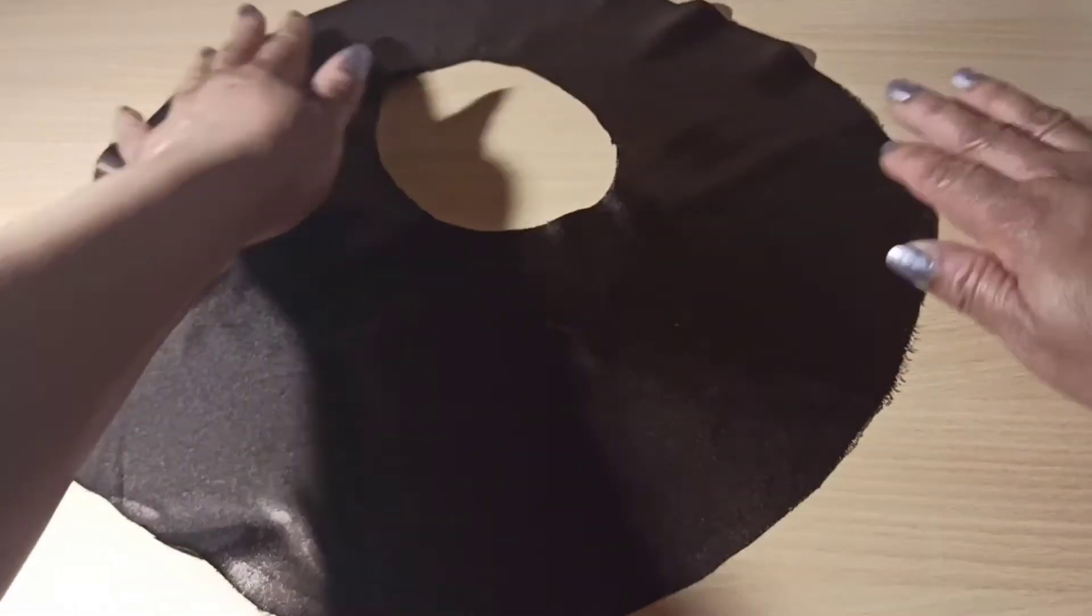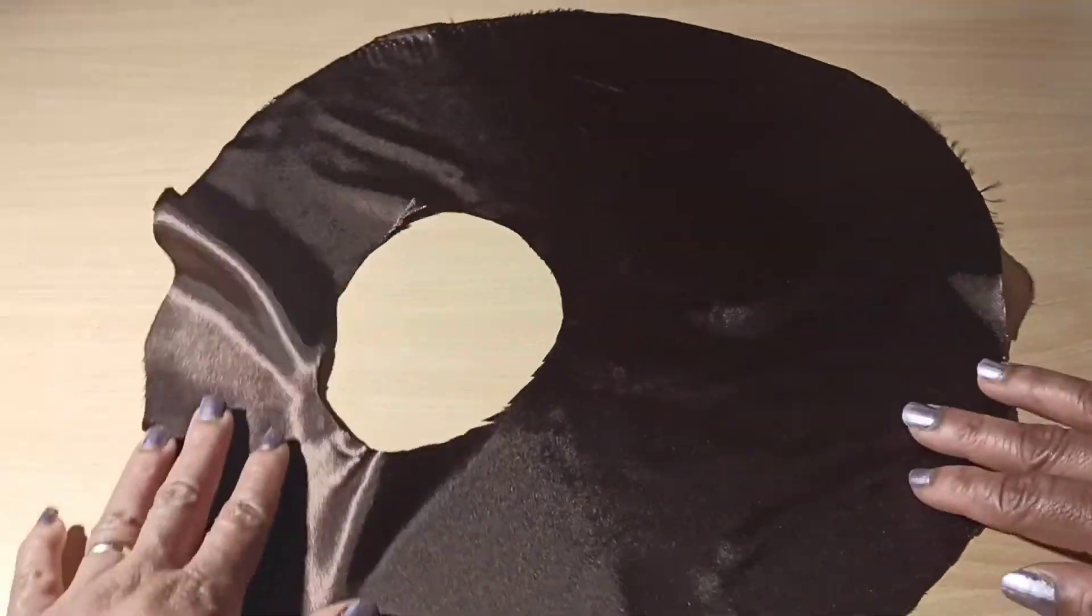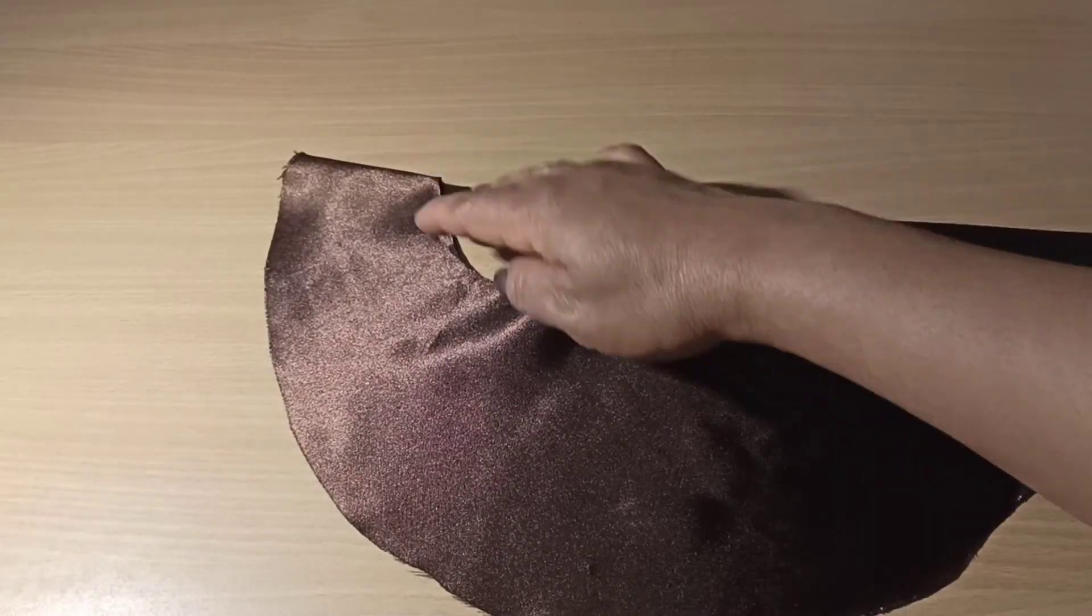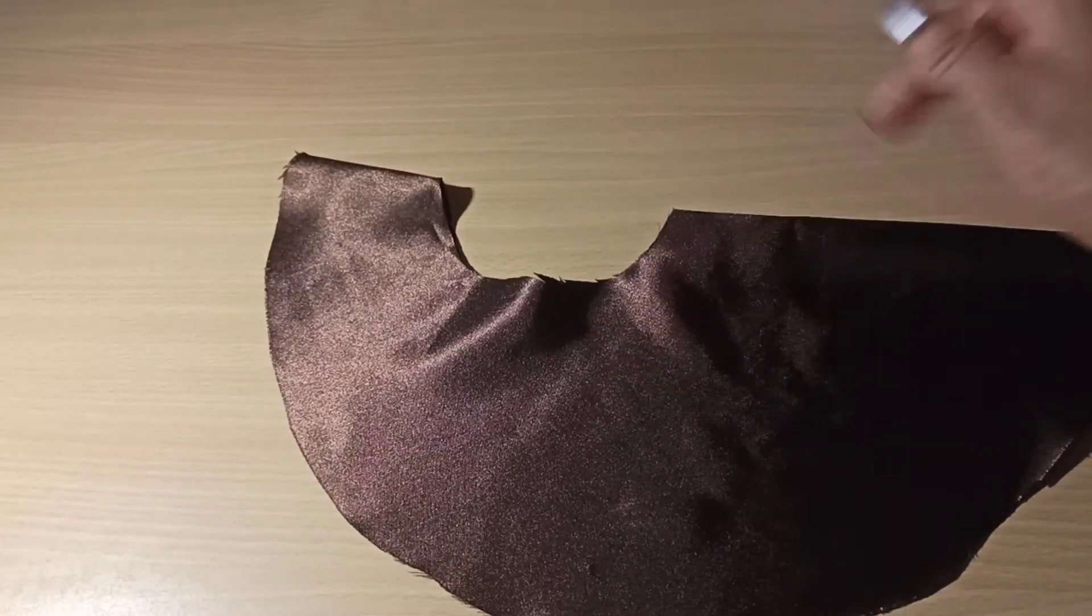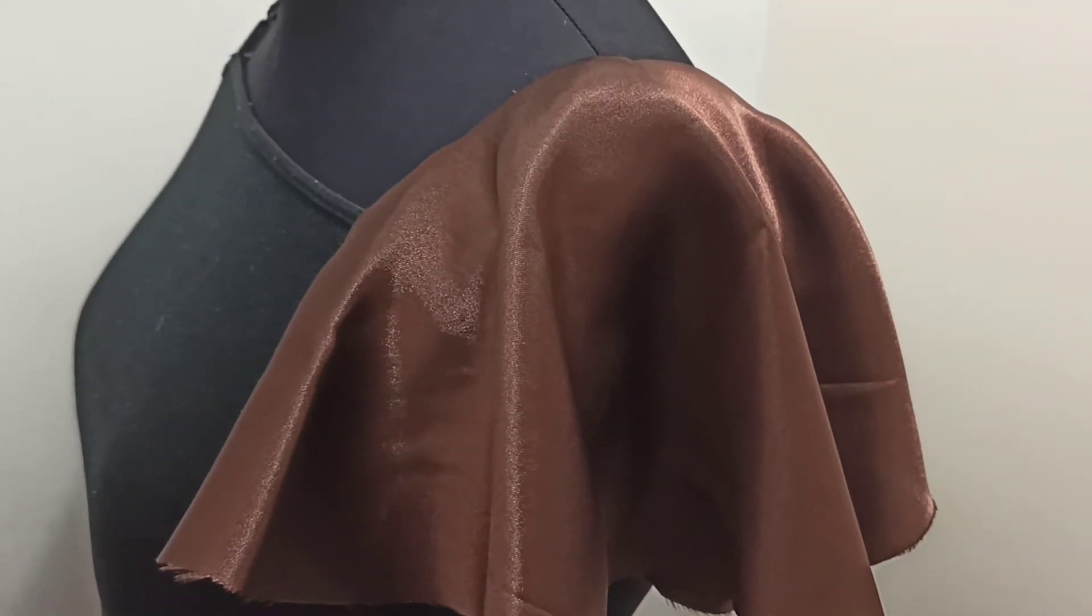So here is our sleeve, ready to be attached to any garment, a top or a dress. You need to attach that. That's the arm hole there. And here is the finished look, guys. I haven't stitched this together, but this is a demonstration of how it will look on any top or blouse.